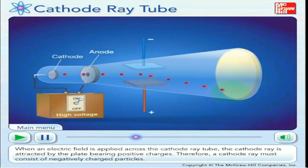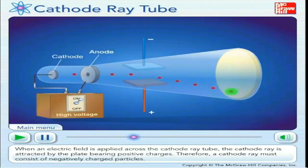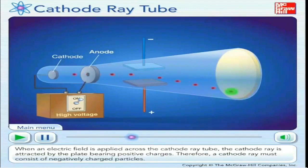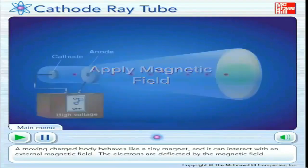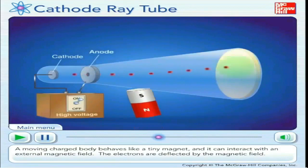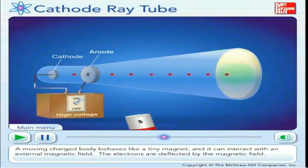Other findings from the cathode ray tube experiments: one, Thomson found that a cathode ray is deflected by electrically charged metal plates — a positively charged plate attracts the cathode ray while a negatively charged plate repels it. Two, a cathode ray can also be deflected by a magnet, which further confirms the theory of electromagnetism.